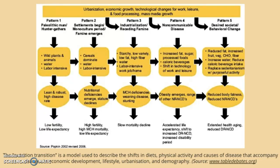Pattern three involves the industrialization stage with receding famine. There's more agricultural progress, featuring starchy, low-variety, low-fat, high-fiber foods and water. It's still labor intensive but there's more variety in work and jobs.